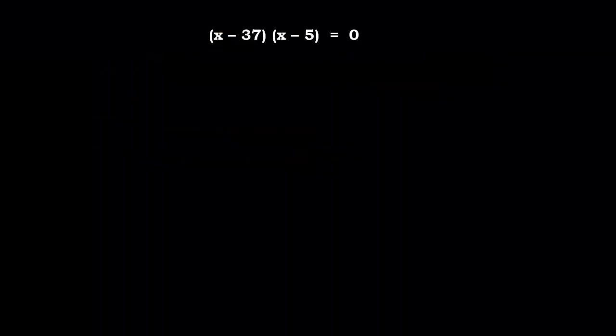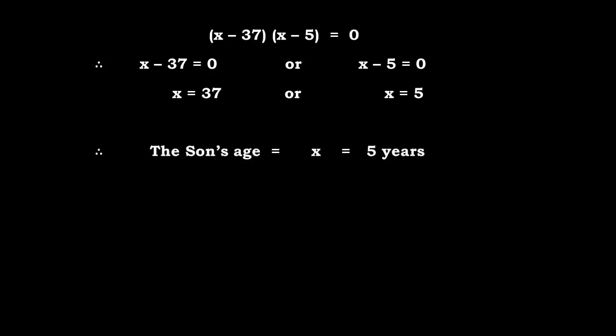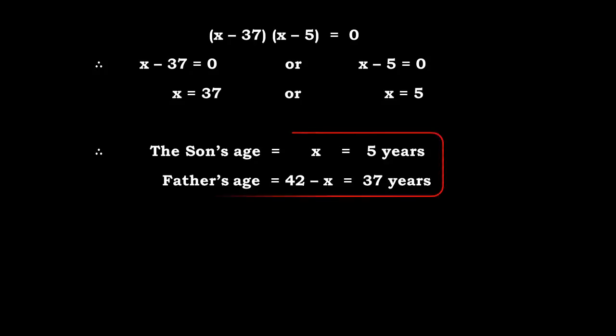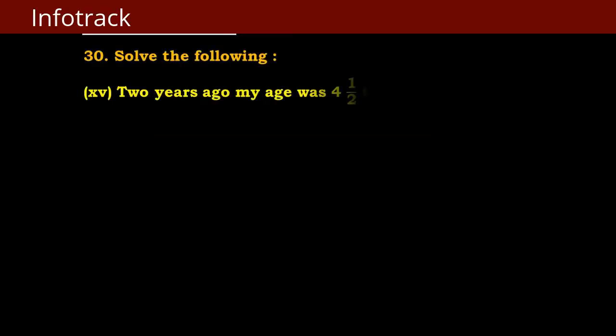So we get x into bracket x minus 37, minus 5 into bracket x minus 37 equals 0. Therefore x minus 37 equals 0 or x minus 5 equals 0. The son's age x equals 5 years and the father's age 42 minus x equals 37 years. The age of the son is 5 years and the age of the father is 37 years.